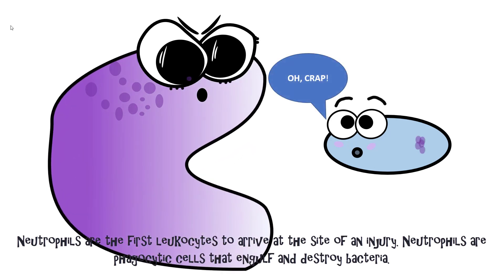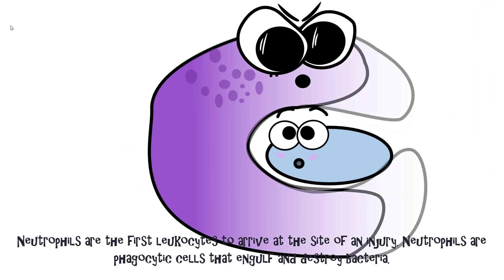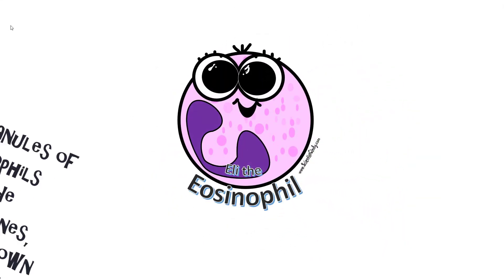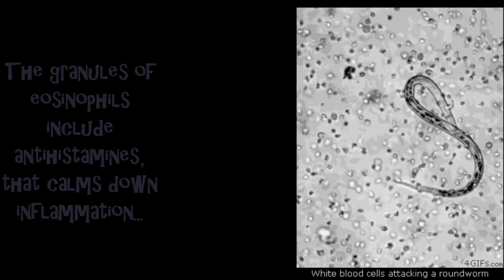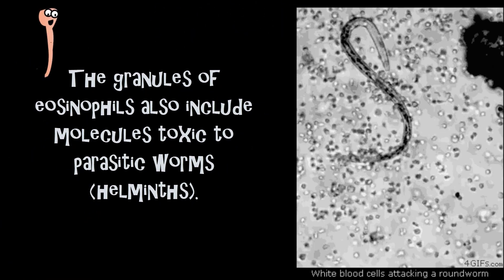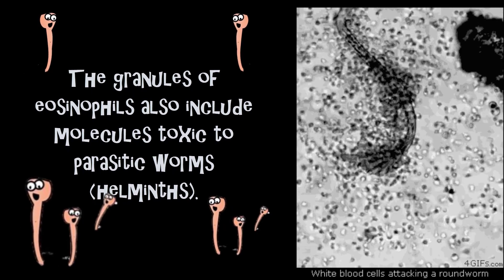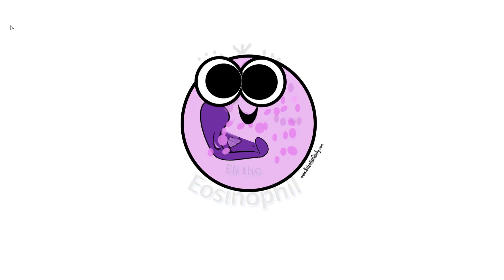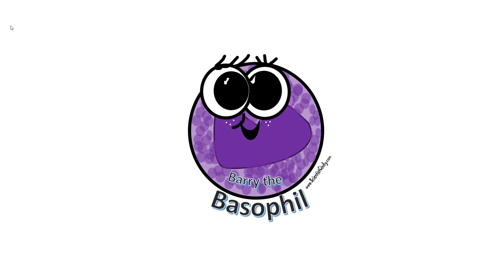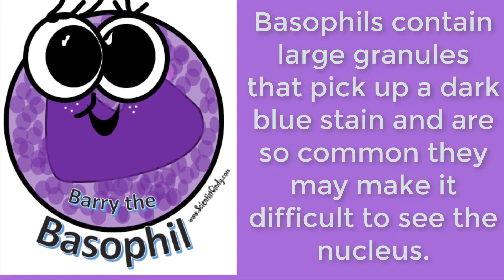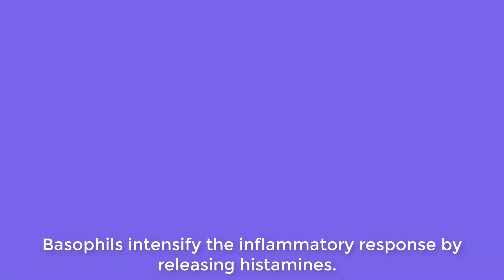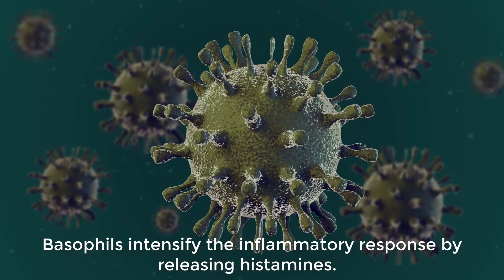Neutrophils are the first leukocytes to arrive at the site of an injury, and they are phagocytic cells that engulf and destroy invaders. Eosinophils are a granular white blood cell whose granules include antihistamines, which calm down inflammation, and molecules toxic to parasitic worms, otherwise known as helminths. The last granular white blood cells are the basophils, which contain large granules that pick up a dark blue stain and intensify the inflammatory response by releasing histamines.